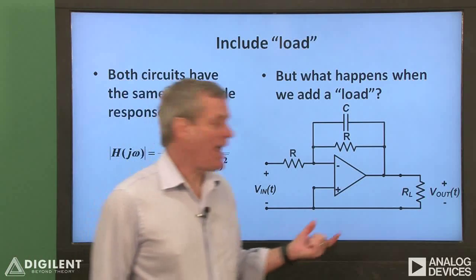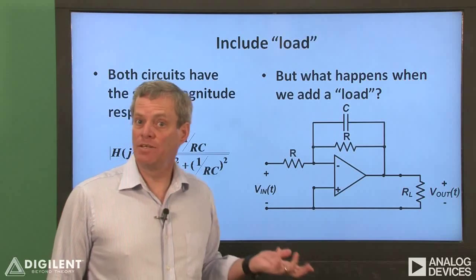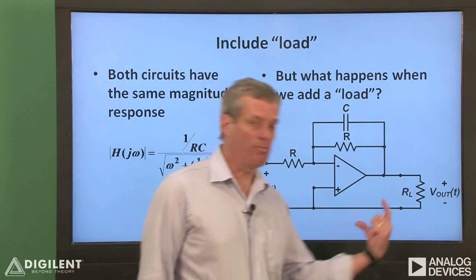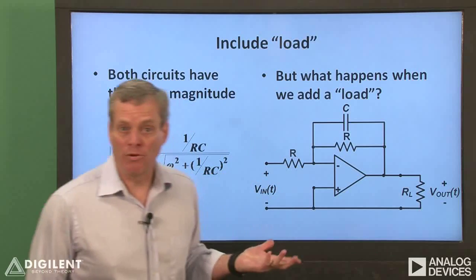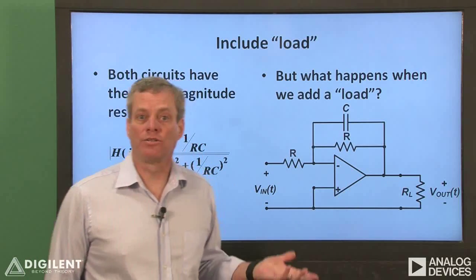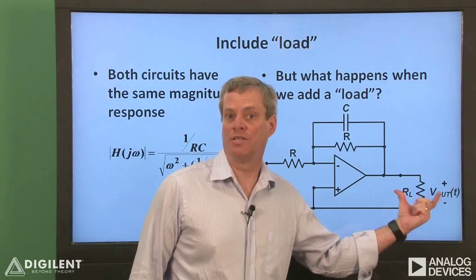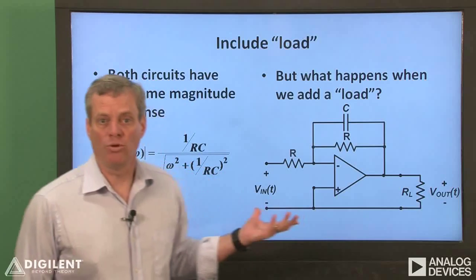However, for the active circuit, adding a load resistance does not change the magnitude response. That's because the circuit will maintain the same output voltage. And the operational amplifier, through its power supplies, will provide any current necessary to maintain this output voltage regardless of the load resistance. Within reason, of course.